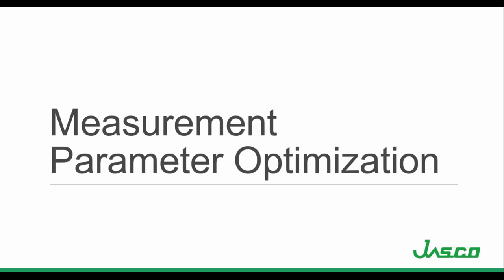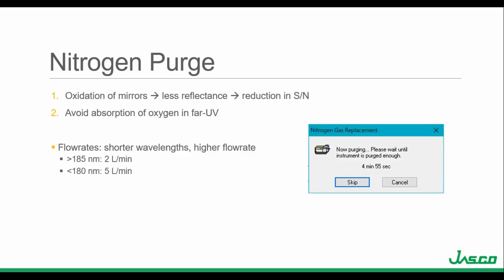Now I'm going to go into measurement parameter optimization — the parameters of the actual instrument. From our first CD webinar, I went over the importance of nitrogen purging for most CD measurements. To summarize: we want to purge the instrument monochromator of oxygen with nitrogen for two reasons. The lamp creates UV radiation, and when UV radiation interacts with oxygen, it creates ozone. Ozone oxidizes the mirrors in the instrument, causing them to lose reflectivity, which causes less light throughput through the monochromator, reducing the signal to noise of the spectrum.